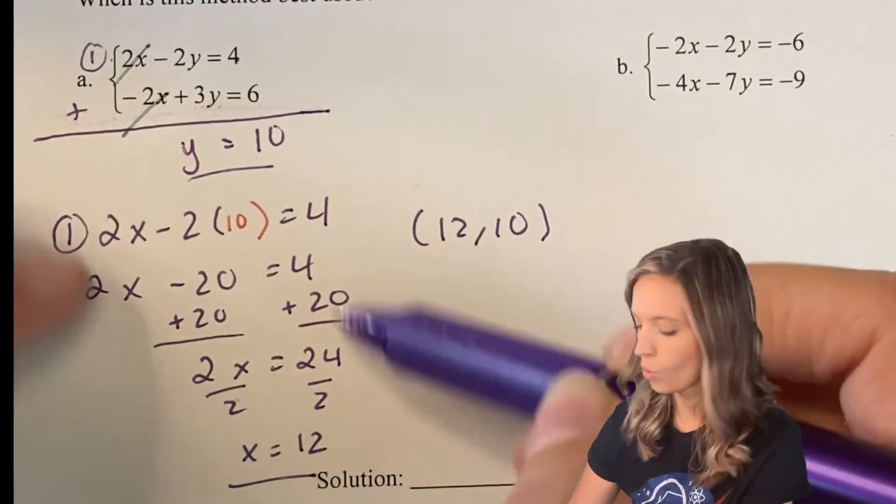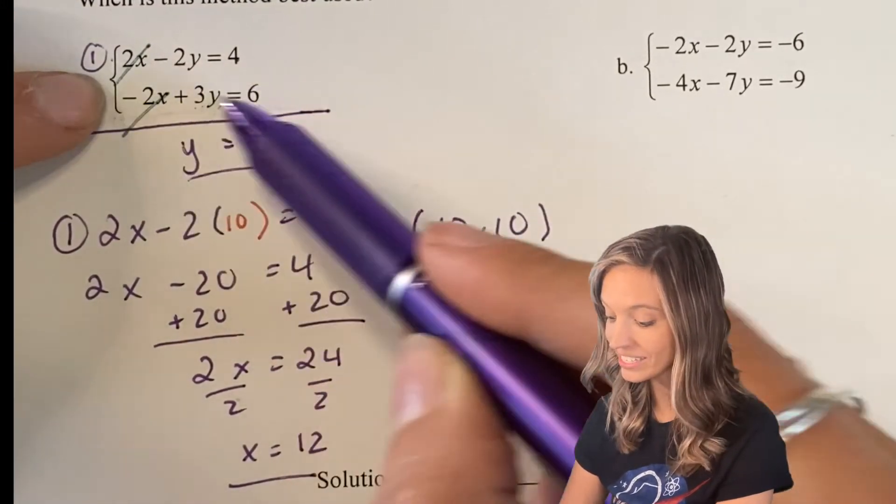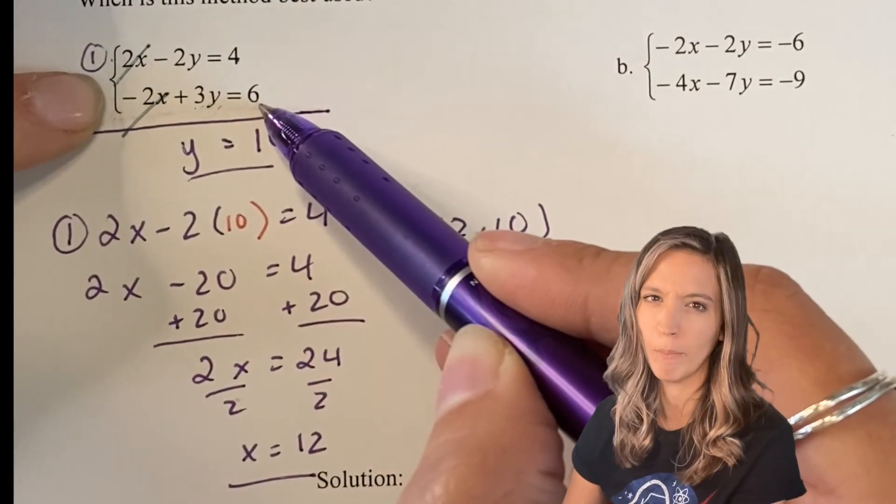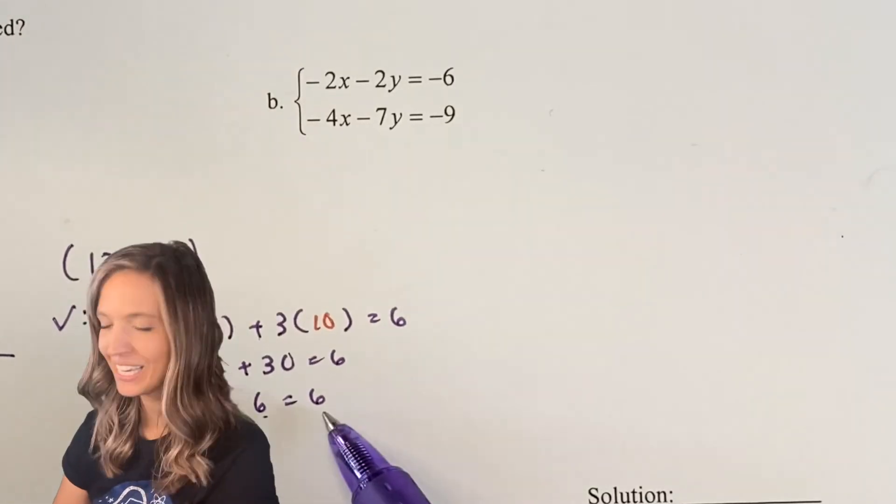Since we already used equation 1 to find the second coordinate, I'm just going to plug my solution into the second equation to make sure it works in both equations. Looks like it checks out. I have 6 = 6.